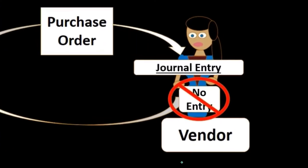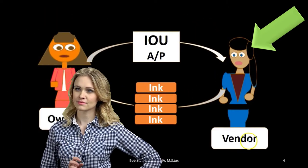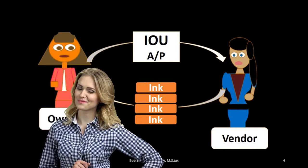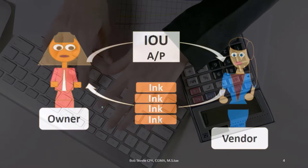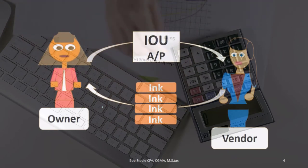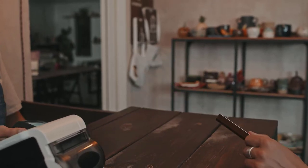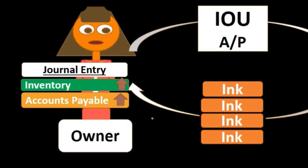There is also no journal entry on the vendor side at this point. What happens next is the vendor ships the goods. At the point of receipt, the owner can record the transaction: we now have the inventory, so we debit inventory and credit accounts payable — the IOU. We count the inventory, make sure it ties out to what we ordered on the purchase order, and now we owe the vendor.